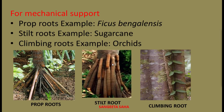Next, modifications of adventitious roots for mechanical function. The first one is prop roots. These prop roots are adventitious aerial roots and they arise from the horizontal aerial branches of trees, found in Ficus bengalensis, commonly known as the banyan tree. These roots grow vertically downward and penetrate the soil, becoming thick and resembling the shape of pillars. This type of root provides support to the spreading branches of the tree.